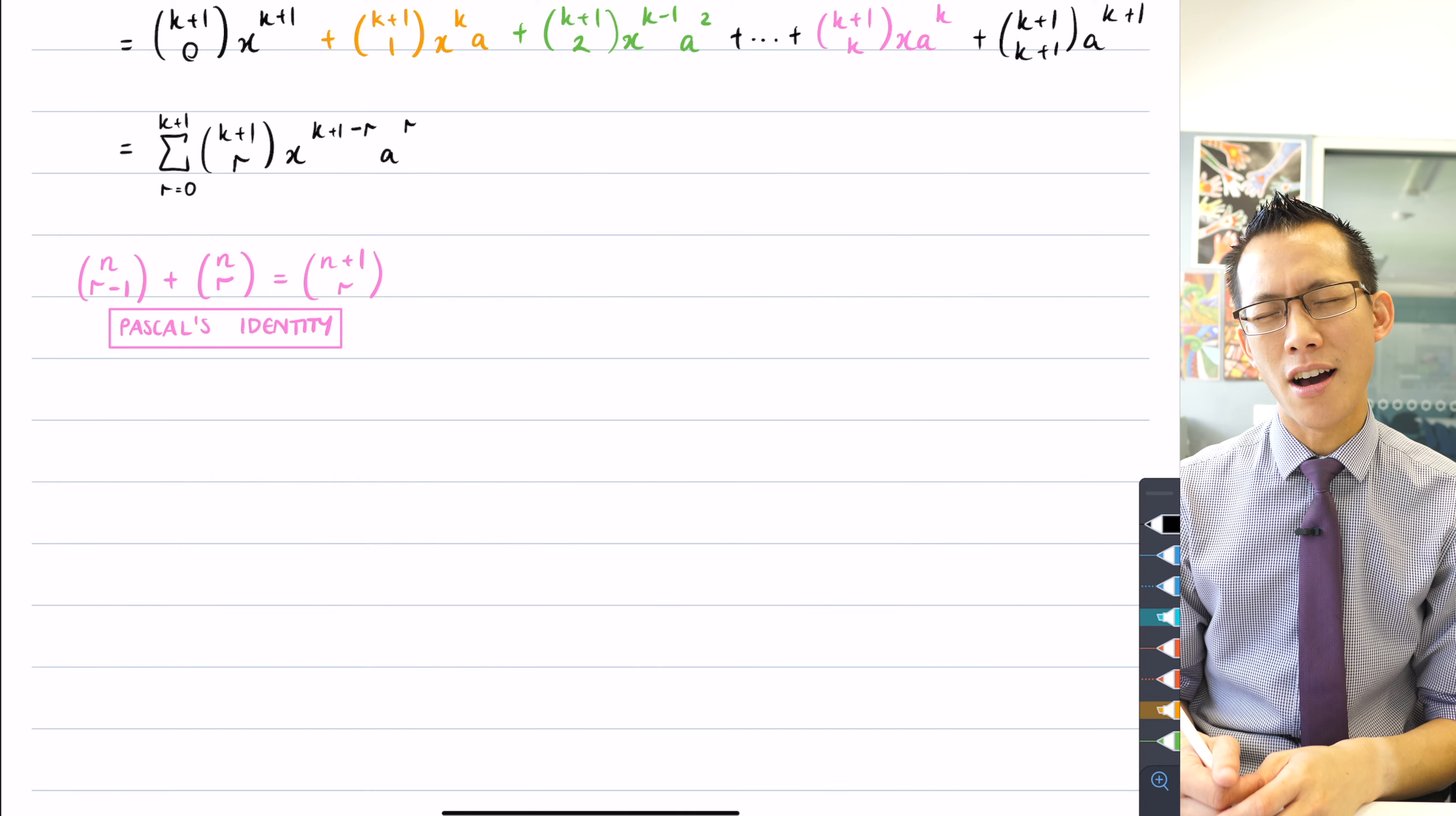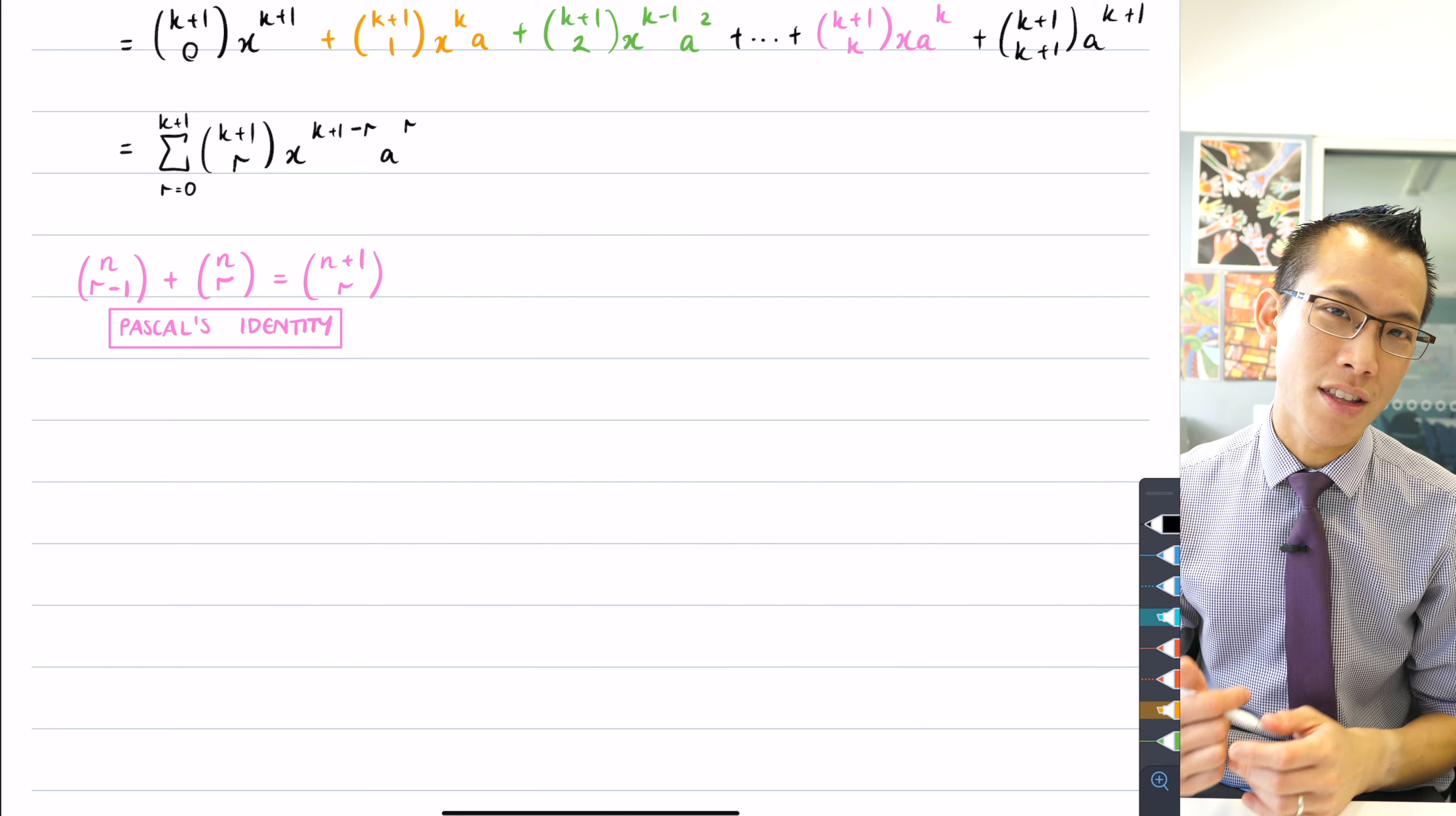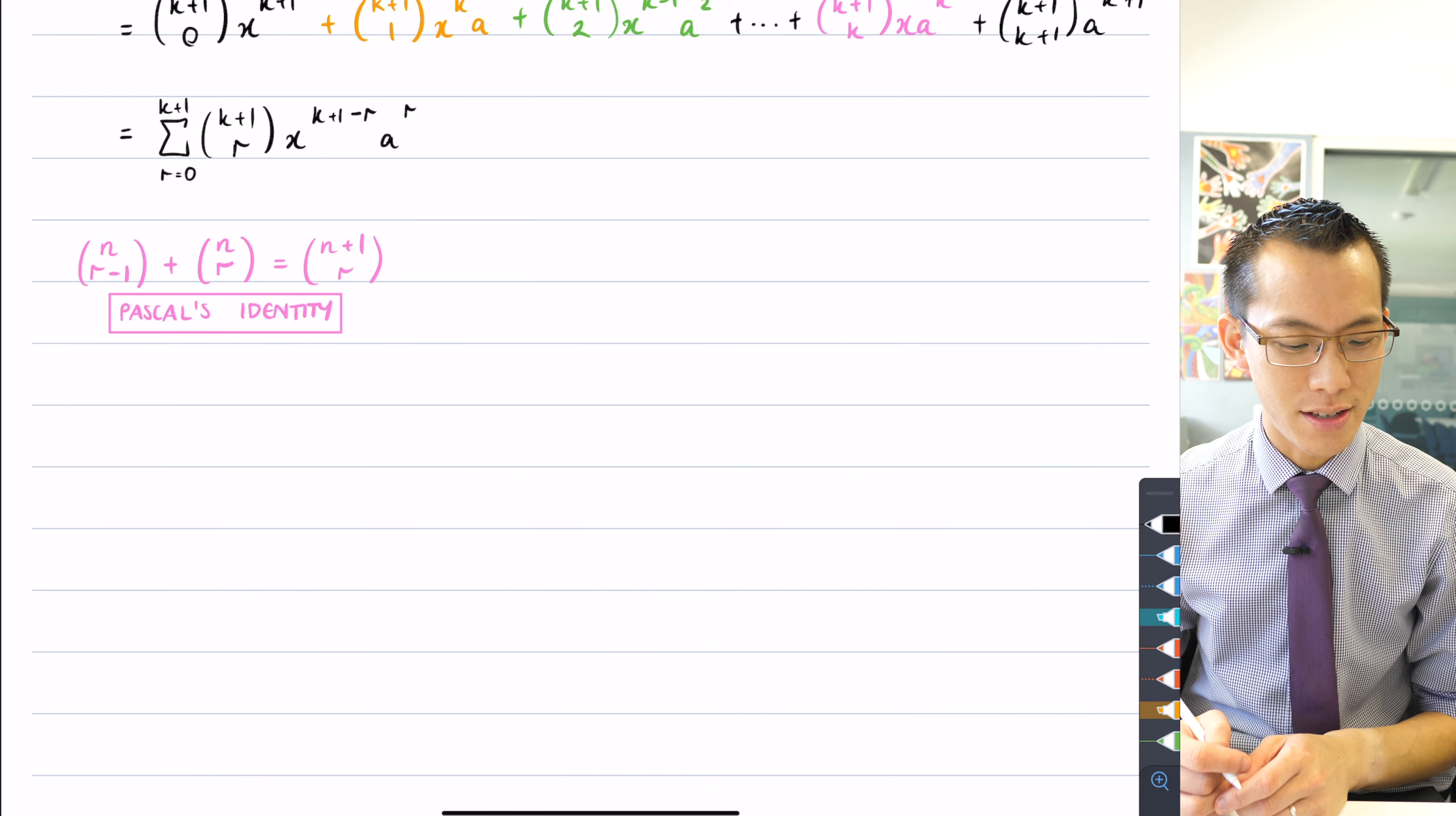But in mathematics, one of the design principles of the course as a whole is that we don't give you anything, almost, that you can't prove yourself using the knowledge that you have. So let's prove Pascal's identity. It's not that much of a challenge if you're willing to wrestle with some factorial notation and remember that stuff from last year. So let's have a go.